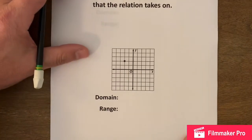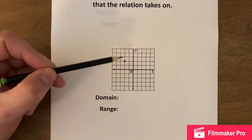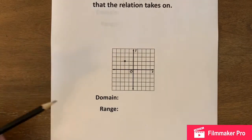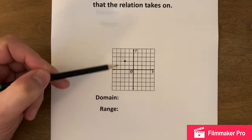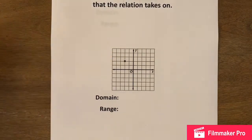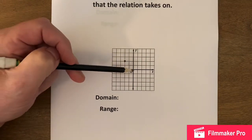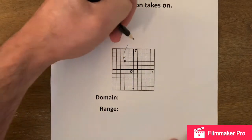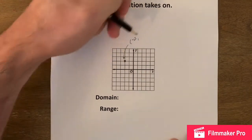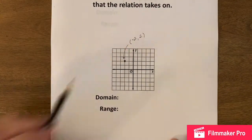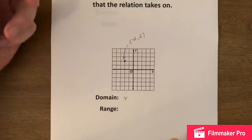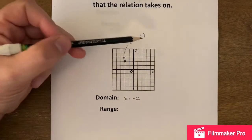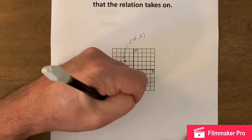Our first one is going to be this little graph right here — we see a single point. We want to put the domain and range down for that single point. The domain is all the x values this relation has. It's only a single point, so its only x value is negative two. The ordered pair for that point would be negative two, two. So the domain would be x equals negative two, and the range would be the y value, which is just positive two — y equals positive two.